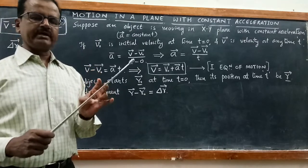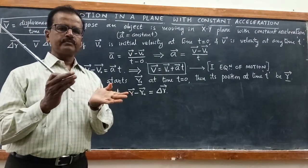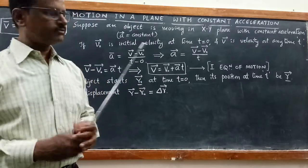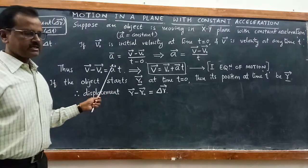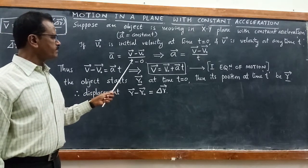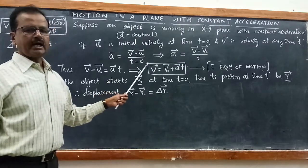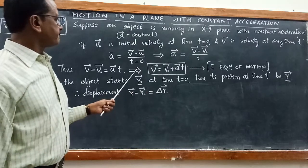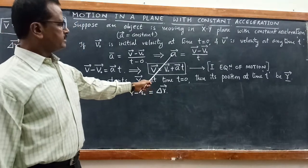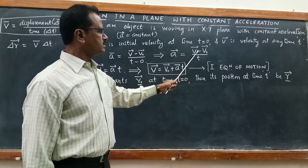So if you calculate average acceleration between any two given intervals of time, that average acceleration will be the same for any interval. Therefore, average acceleration ā = (v − v₀) / (t − 0), and this result is the acceleration vector.